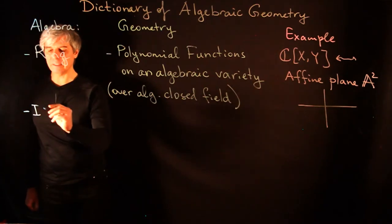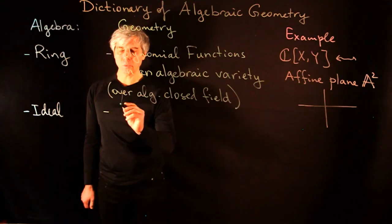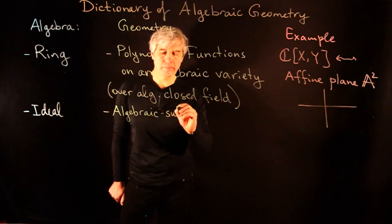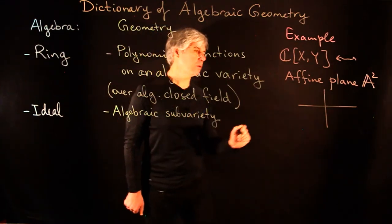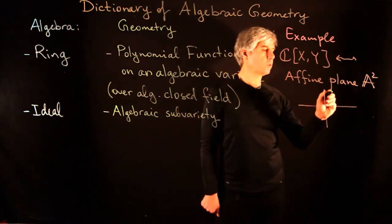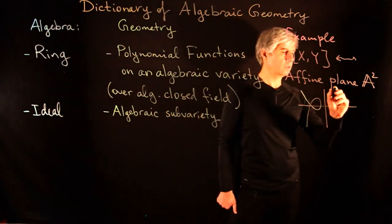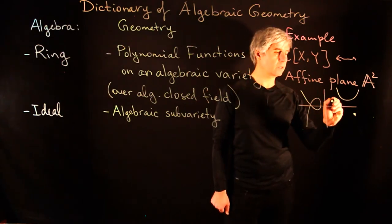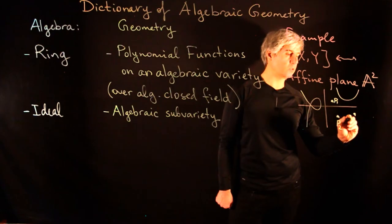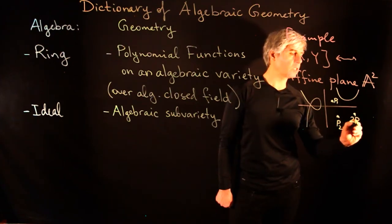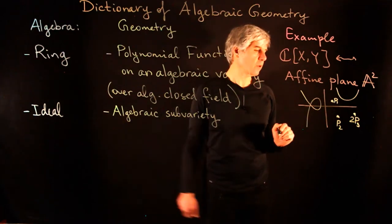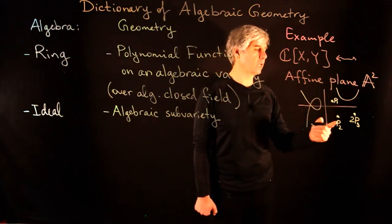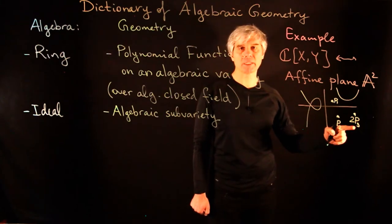Geometrically, an ideal corresponds to an algebraic subvariety — a collection of curves and points on this plane, possibly taken with multiplicity. For example, a point can be taken with multiplicity 2. The ideal consists of polynomial functions on the plane that vanish on these curves and at this point, vanishing with multiplicity 2 at the specified point.